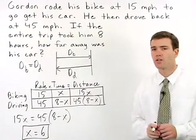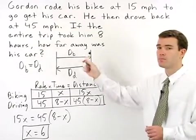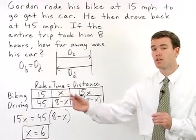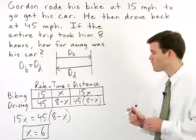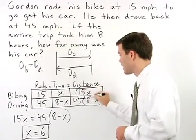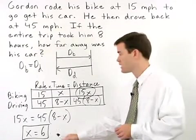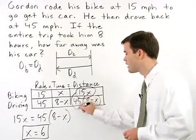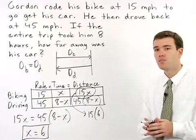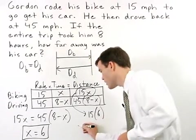Now let's look at what the question is asking. How far away was his car? In other words, how far did he have to bike to get to his car? So what was his distance biking? Well, if we look at our chart, distance biking is represented by 15x. Since we know that x equals 6, his distance biking is then 15 times 6, or 90 miles. So we know his car was 90 miles away.